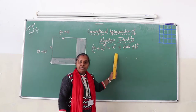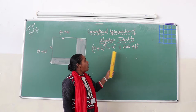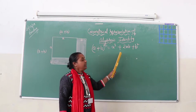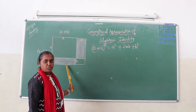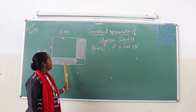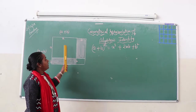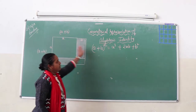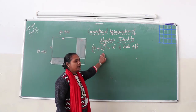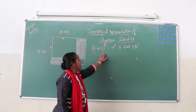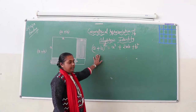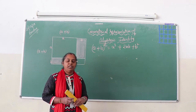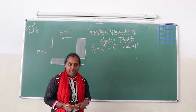This is the identity we all are aware of. We will verify this identity with the help of a geometrical figure. The geometrical figure will help us prove this identity. To prove this identity, we need previous knowledge of the area of a square.